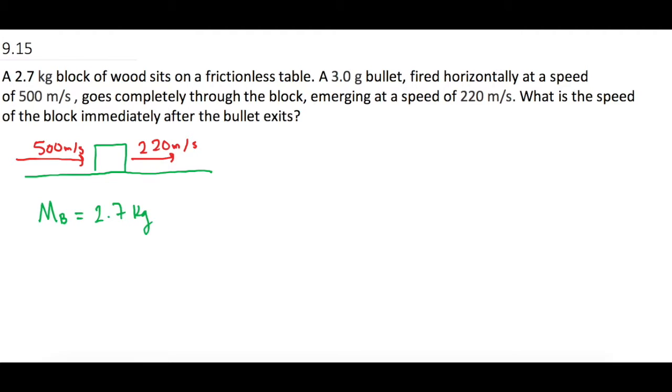What is the speed of the block immediately after the bullet exits? Okay, so I'll do red for the bullet. We have a little m, little b for the bullet, and that is 3 grams or in SI units 0.003 kilograms.